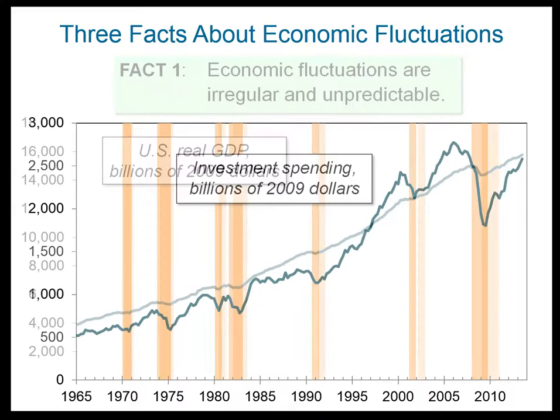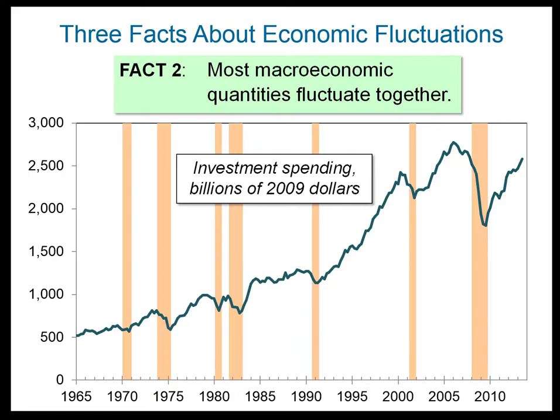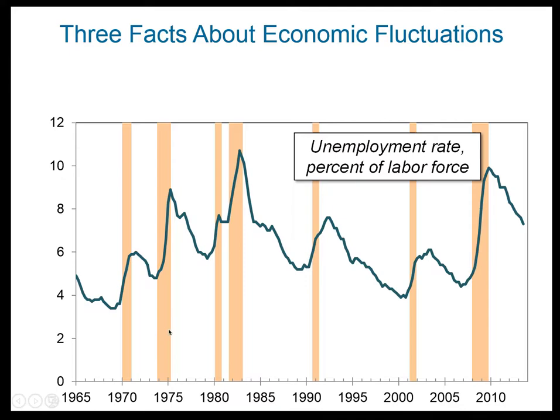Fact number two is these quantities fluctuate together. Instead of having the GDP, I have investment spending — and you see every time a recession comes along, the investment spending drops. So these macroeconomic variables are moving together, as well as the unemployment rate. You see that during recessions, the unemployment rate goes up, just like we would expect.